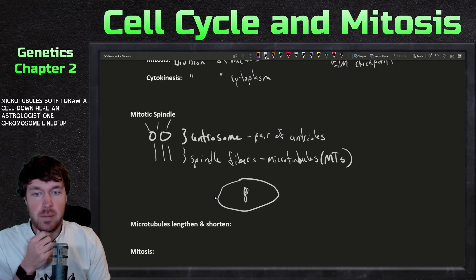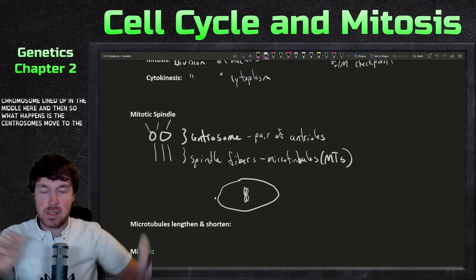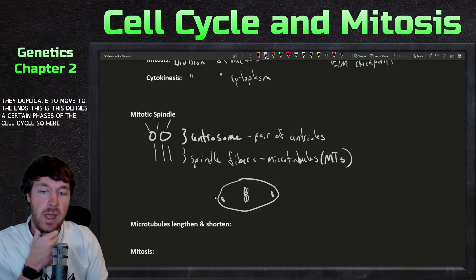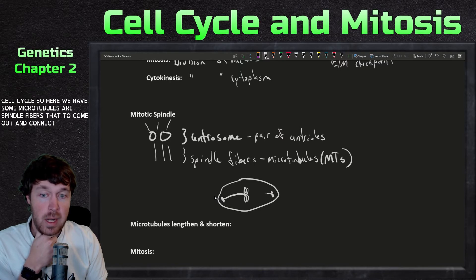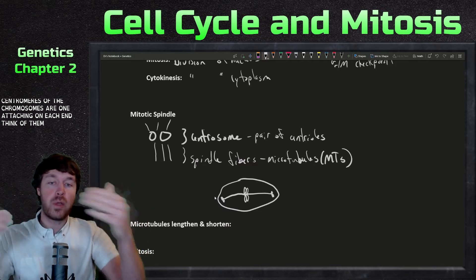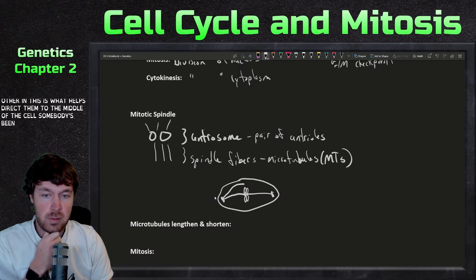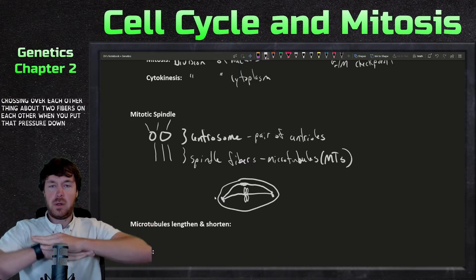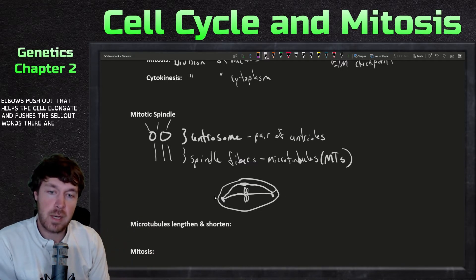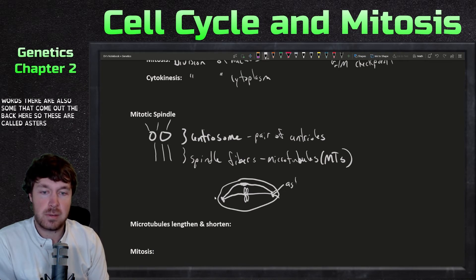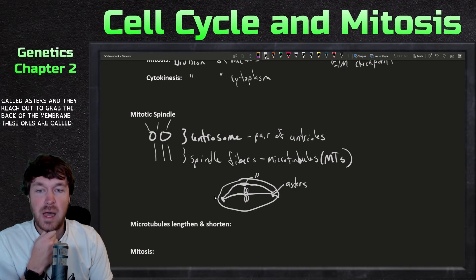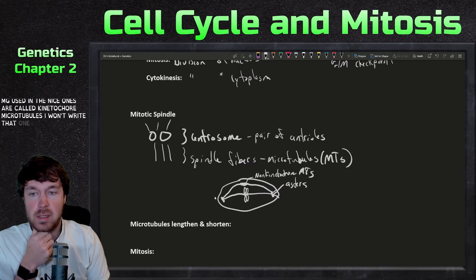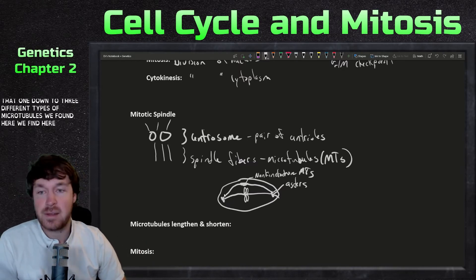The centrosomes duplicate and move to opposite ends of the cell. Spindle fibers reach out and connect to the kinetochore at the centromeres of each chromosome — one attaching on each end — pulling them to the middle. Some microtubule spindle fibers cross over each other, and that pressure helps the cell elongate. There are also asters that reach out to grab the back of the membrane. These are non-kinetochore microtubules, while those attached to chromosomes are kinetochore microtubules.